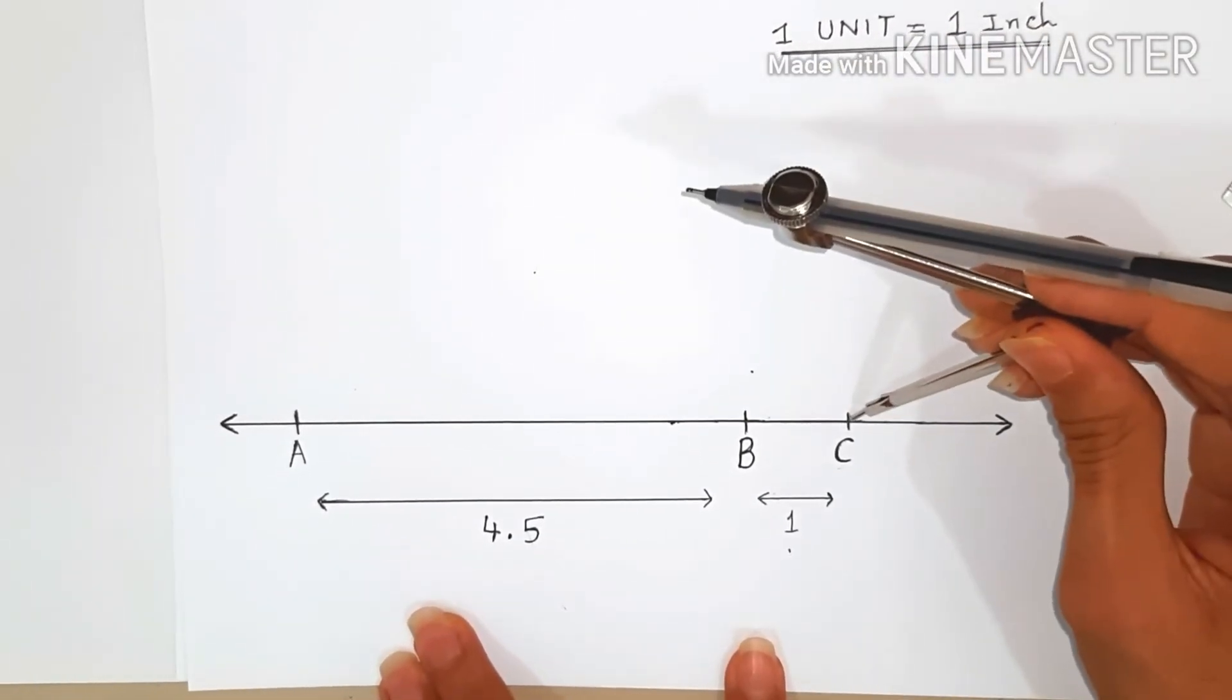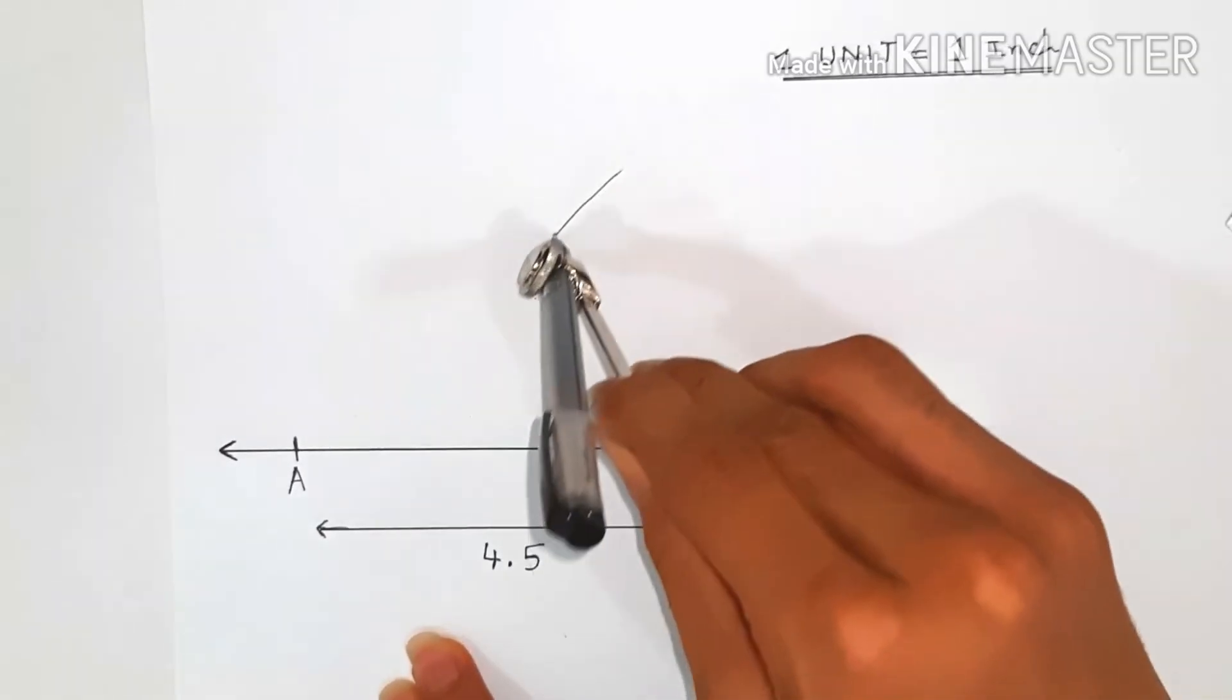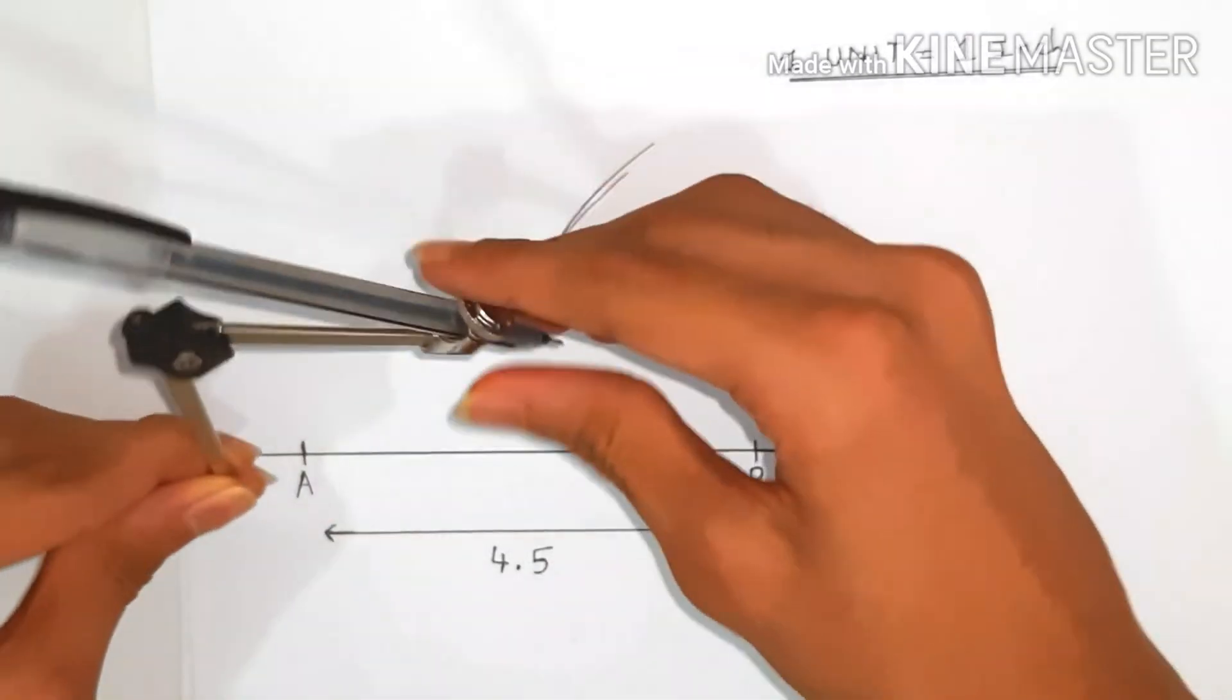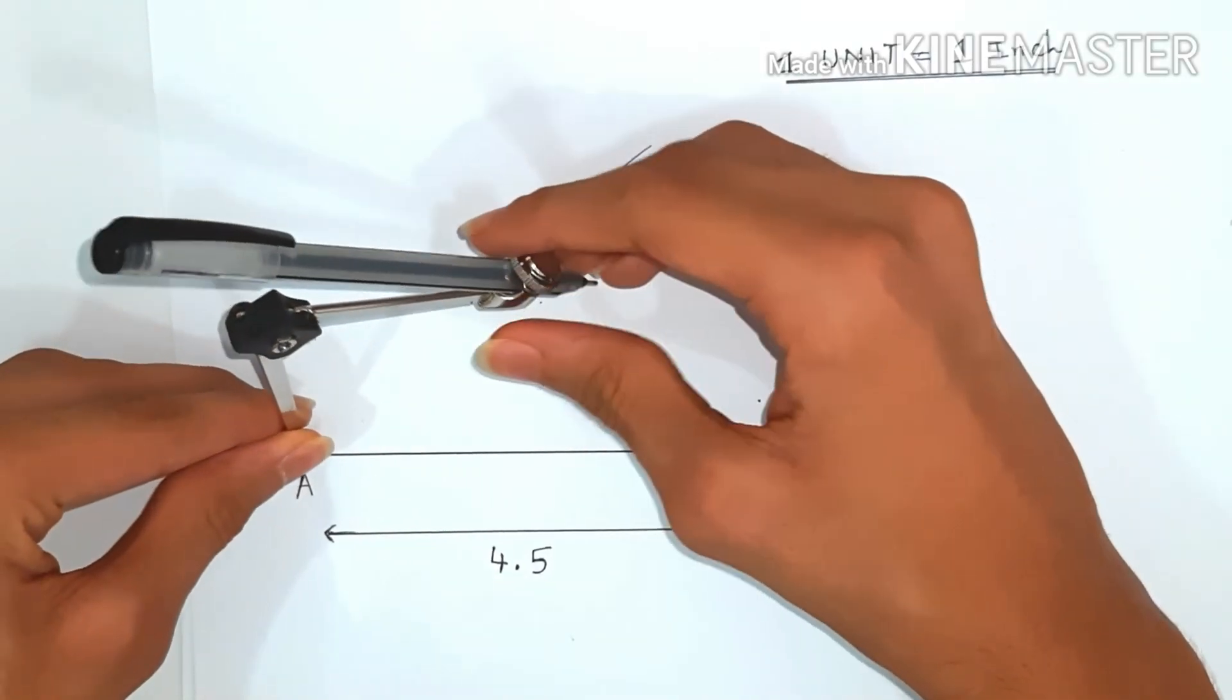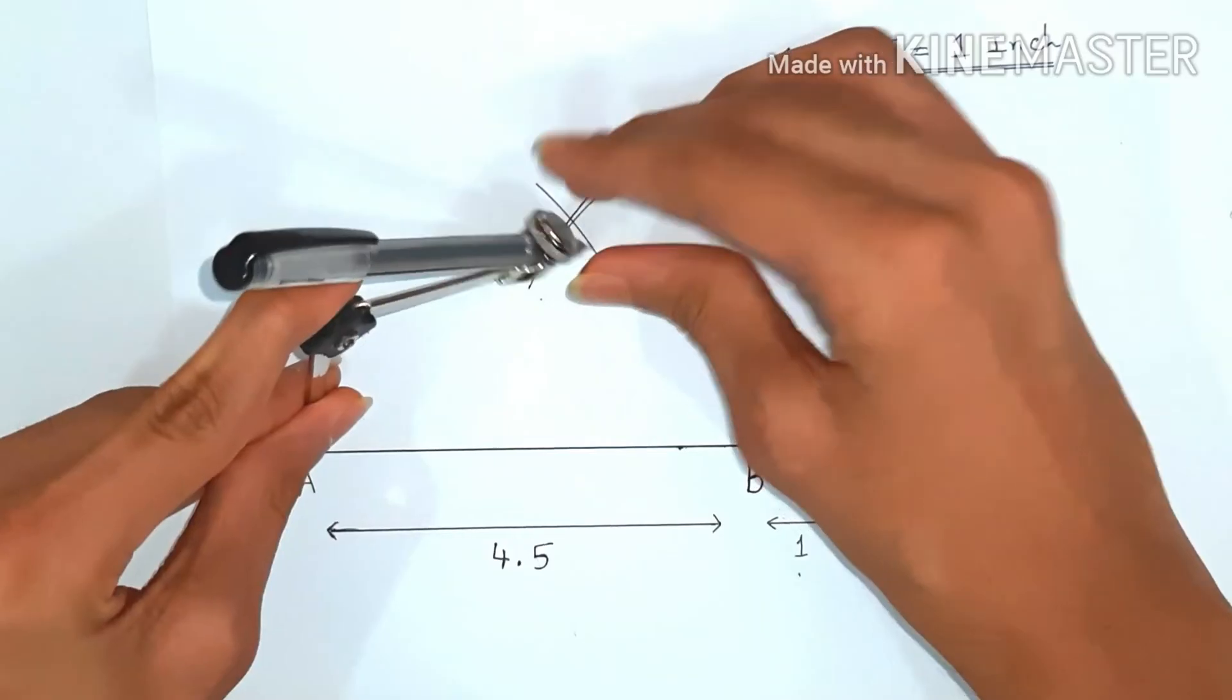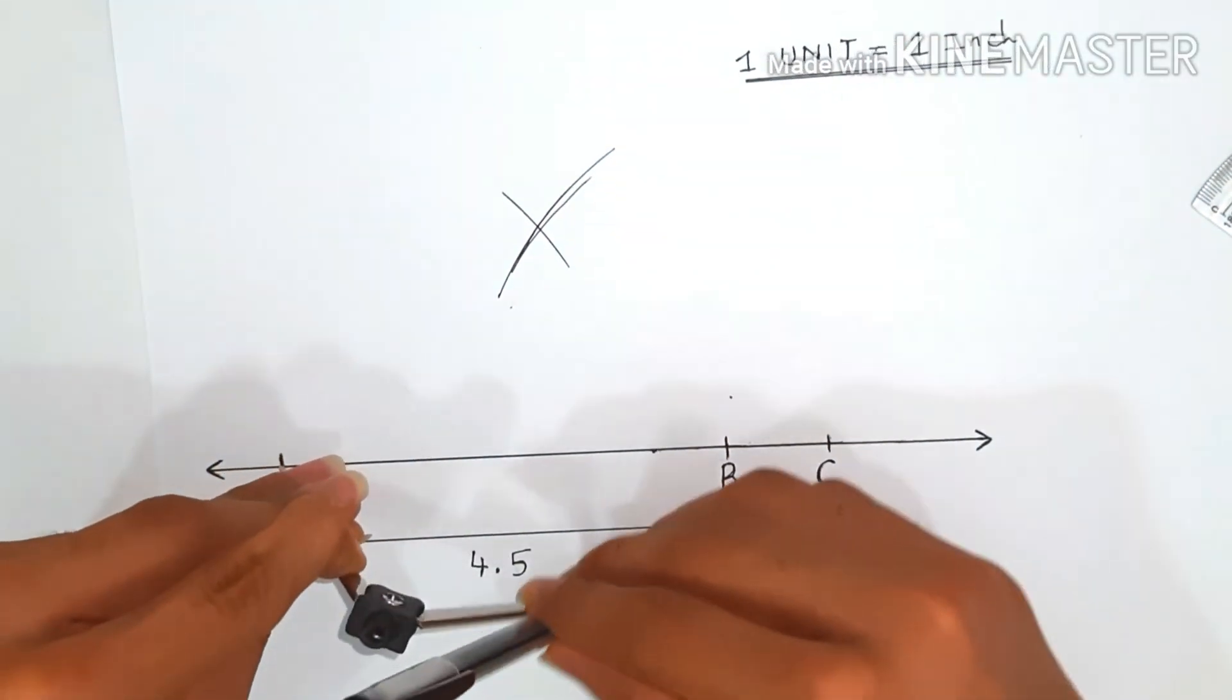To bisect A and C, we'll take C as center and create an arc. Then we'll take A as the center and cut the previously made arc. This point would be perpendicular to line AC.